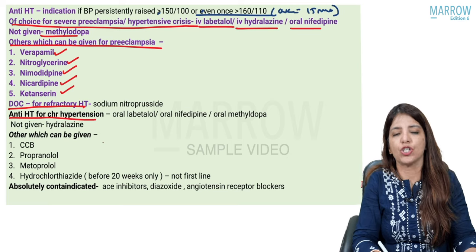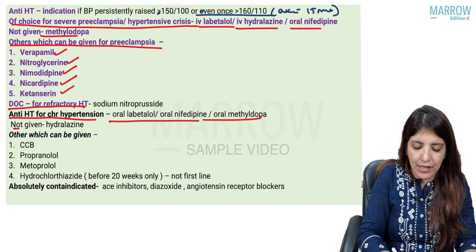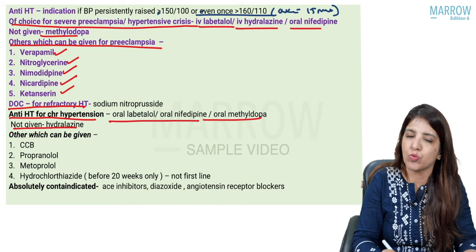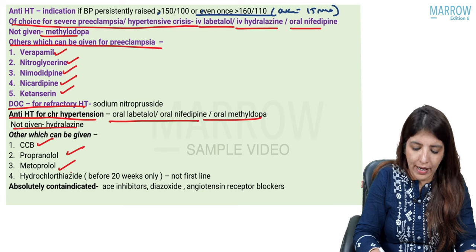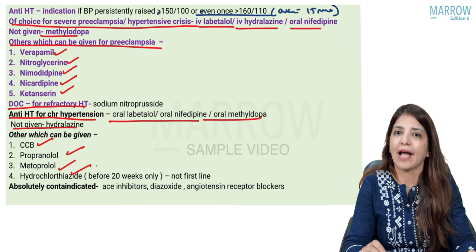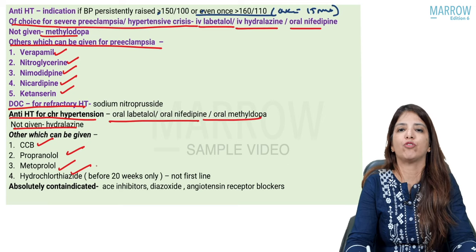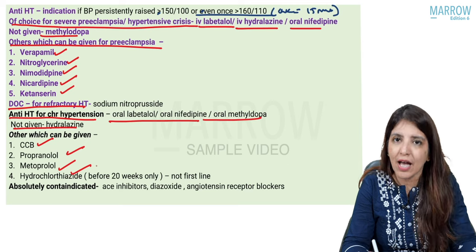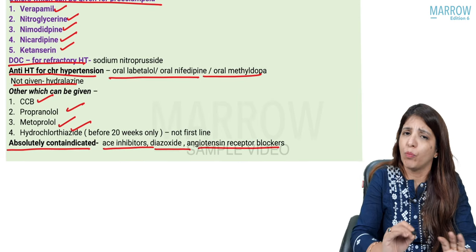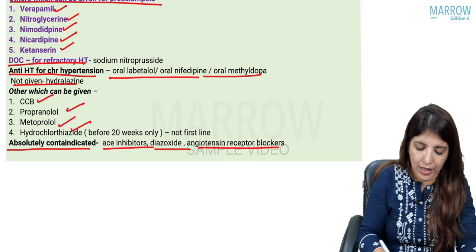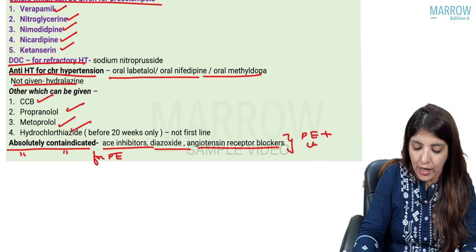For antihypertensives in chronic hypertension — again three first-line drugs: oral labetalol, oral nifedipine, or oral methyldopa. Hydralazine is not given for chronic hypertension. Other drugs per Williams new edition include CCBs, propranolol, metoprolol, and hydrochlorothiazide. Diuretics can be used for chronic hypertension before 20 weeks but are not first-line. Absolutely contraindicated drugs are ACE inhibitors, diazoxide, and angiotensin receptor blockers — contraindicated in both chronic hypertension and preeclampsia.